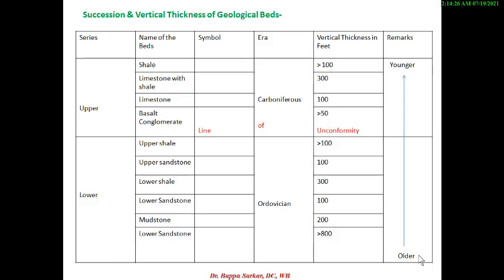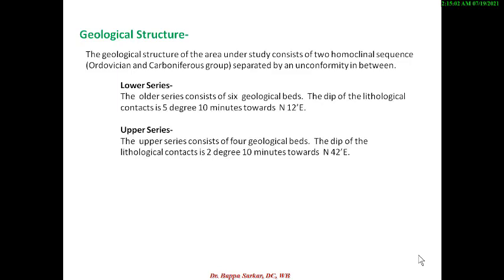After finishing this table, prepare the geological structure. The geological structure of the area under study consists of two homoclinal sequences — one Ordovician and one Carboniferous — separated by an unconformity. An unconformity is a non-erosional and non-depositional line which separates the two eras. In this map, unconformity separates the Ordovician and Carboniferous eras. Write the lower series first, since it was deposited first. The lower series consists of six geological beds.